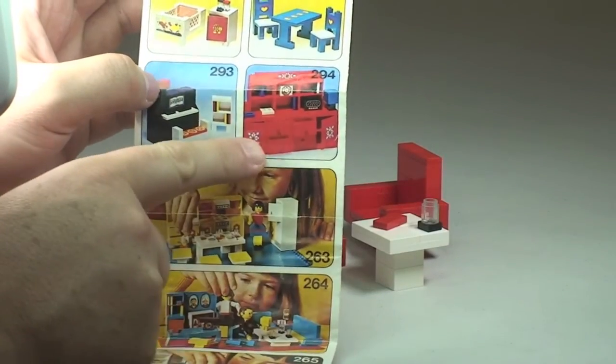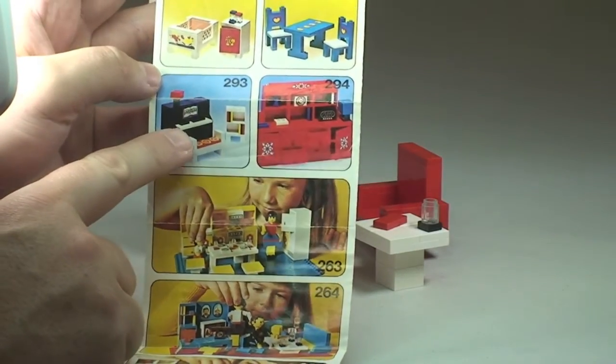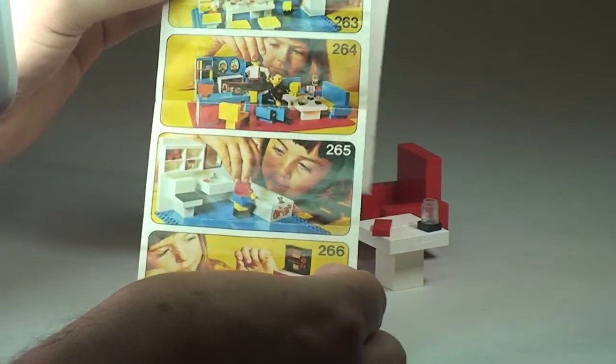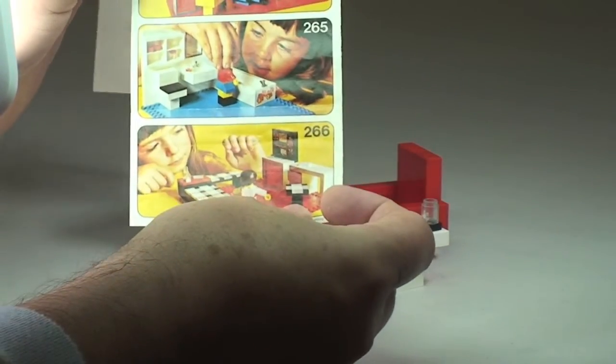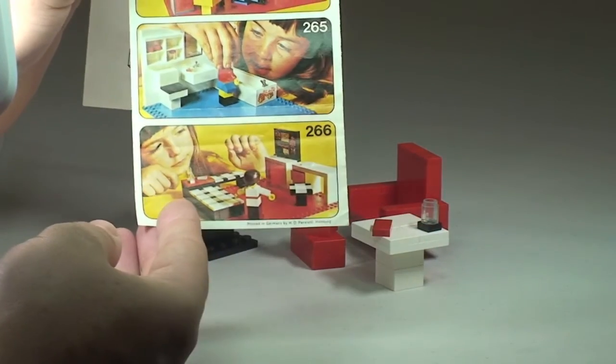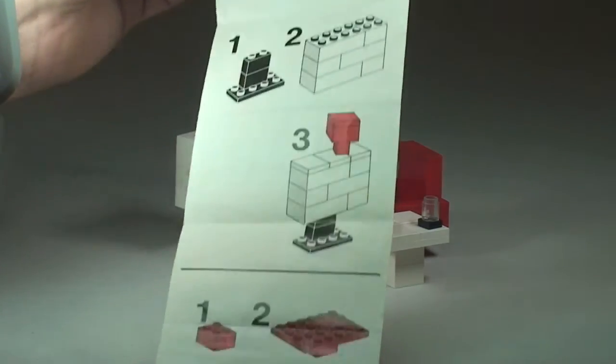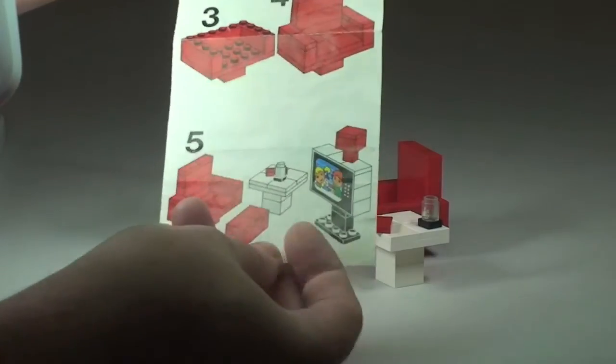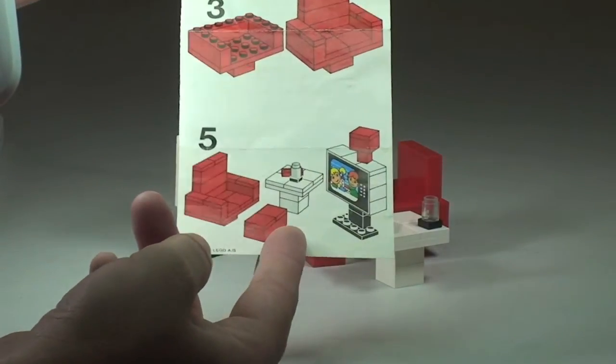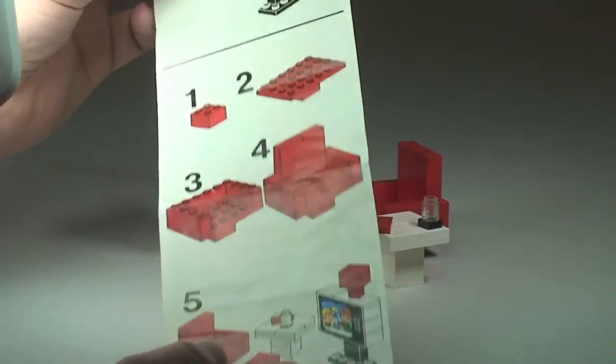What else do we have? This kind of dresser here. Piano. Down here. And then obviously a number of the bigger sets that will obviously form part of this theme. And then on the other side is obviously the building instructions for this particular set. So a total of 5 steps to build the set.